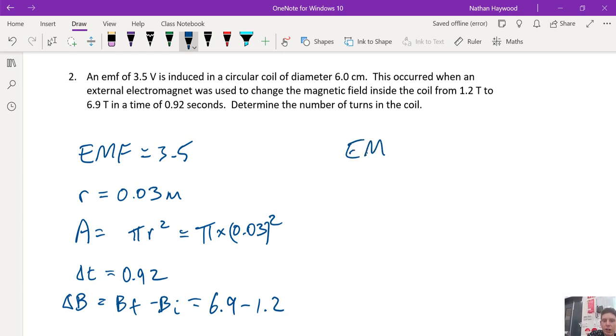All right. EMF formula, here we go. EMF equals the number of turns, negative number of turns, times the change in the flux, divided by the change in time.